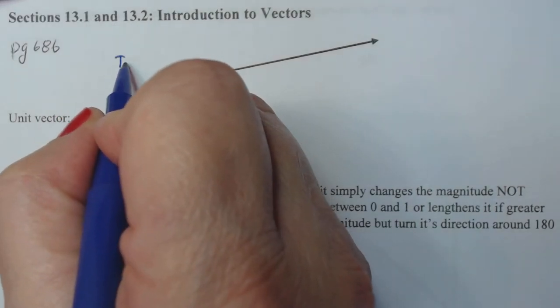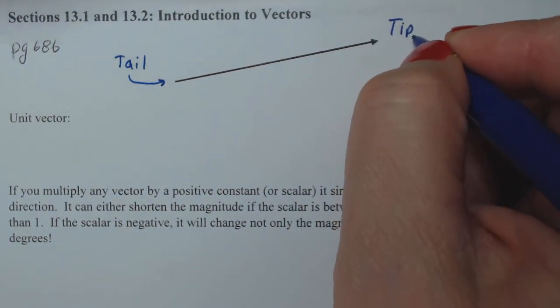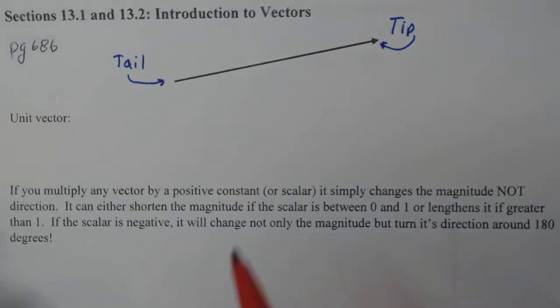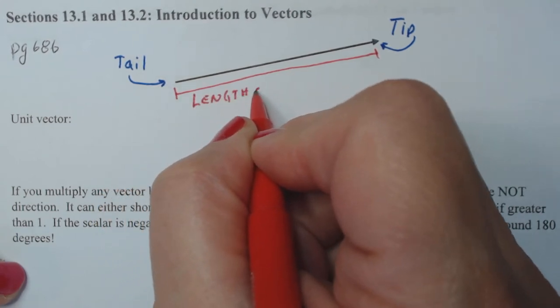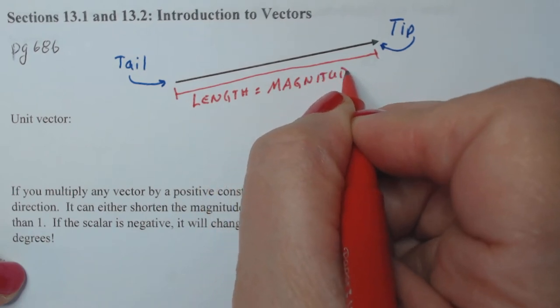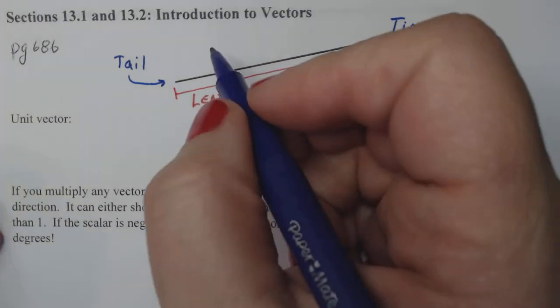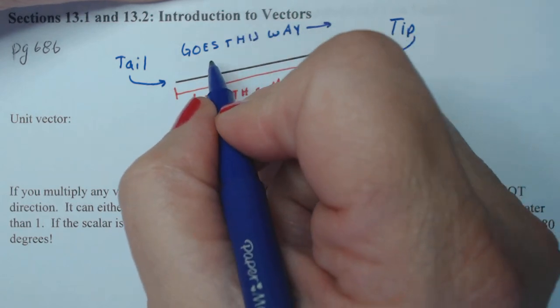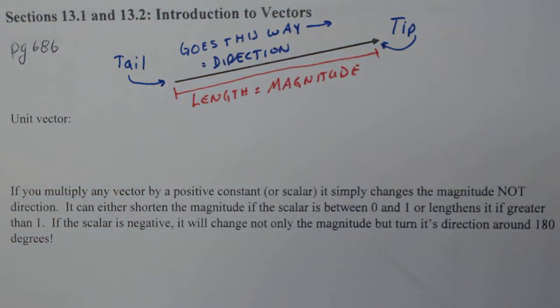So this end here is considered the tail. And this end over here is the tip, should be easy to remember. Think about an actual arrow, the tip of an arrow. The length of the arrow from here to here is known as the magnitude. Think about the word magnitude in the English language. How big something is. That's exactly what that is. Now this arrow goes this way. And this is called the direction. So you need to understand that terminology because they're going to talk about it in problems in different ways. So make sure you know that vocabulary.